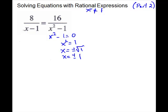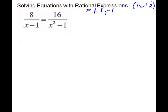We've already thrown away positive 1, so we don't have to write it again, but we have to also exclude negative 1. To solve this as a proportion, we will do cross products. So we're going to have 8 times the quantity x squared minus 1 — use parentheses so you get it times both — and on the other side, 16 times the quantity x minus 1.